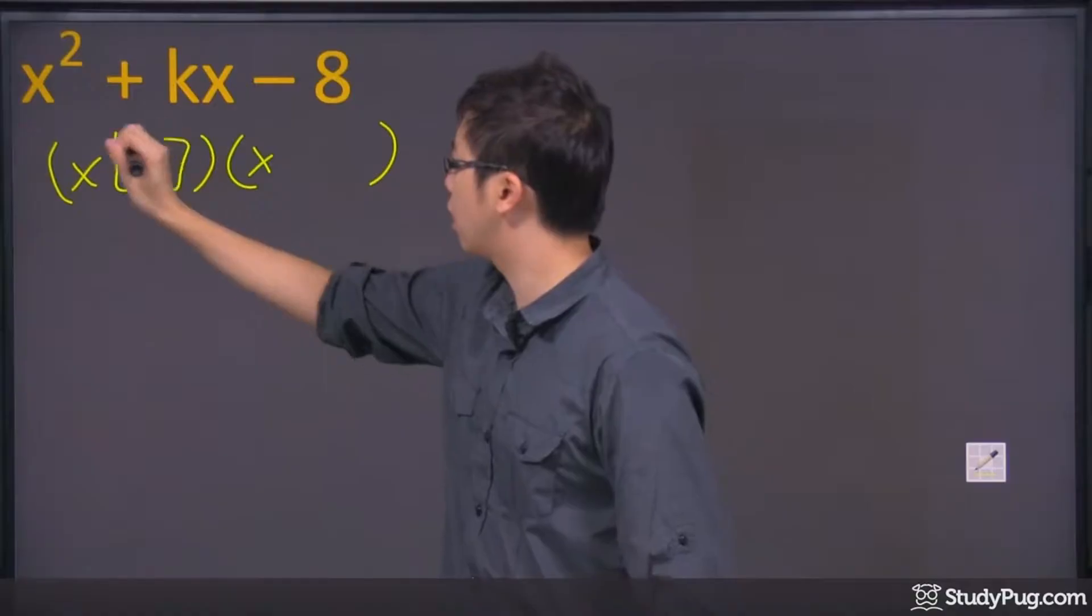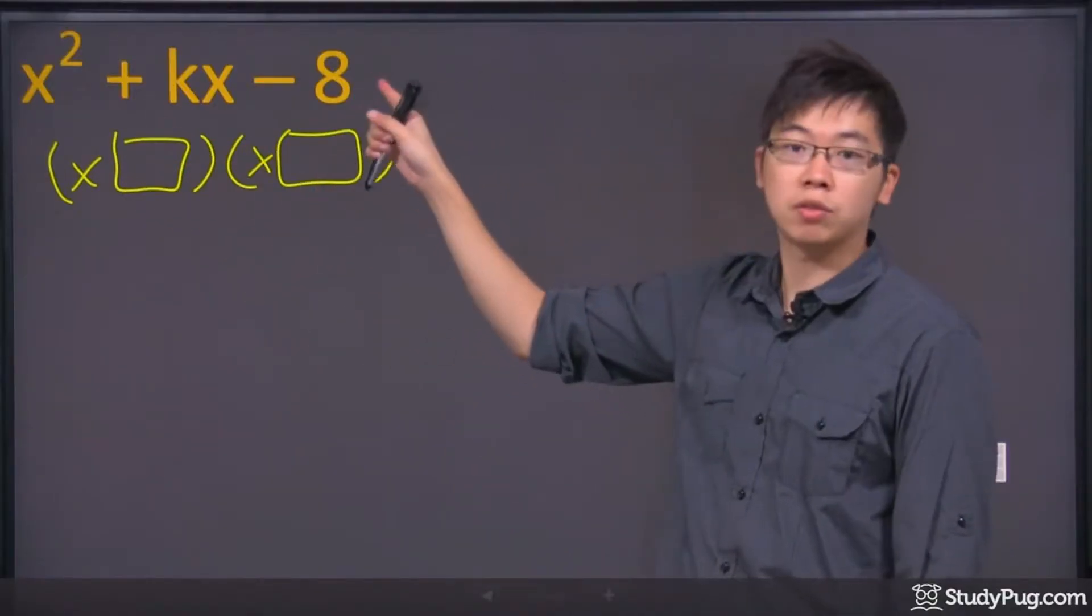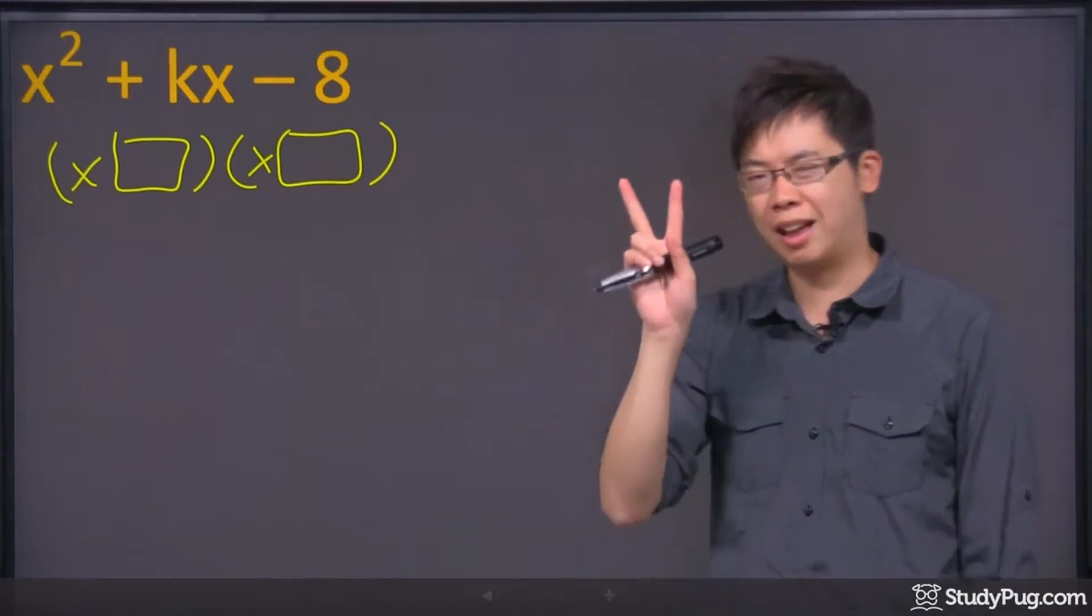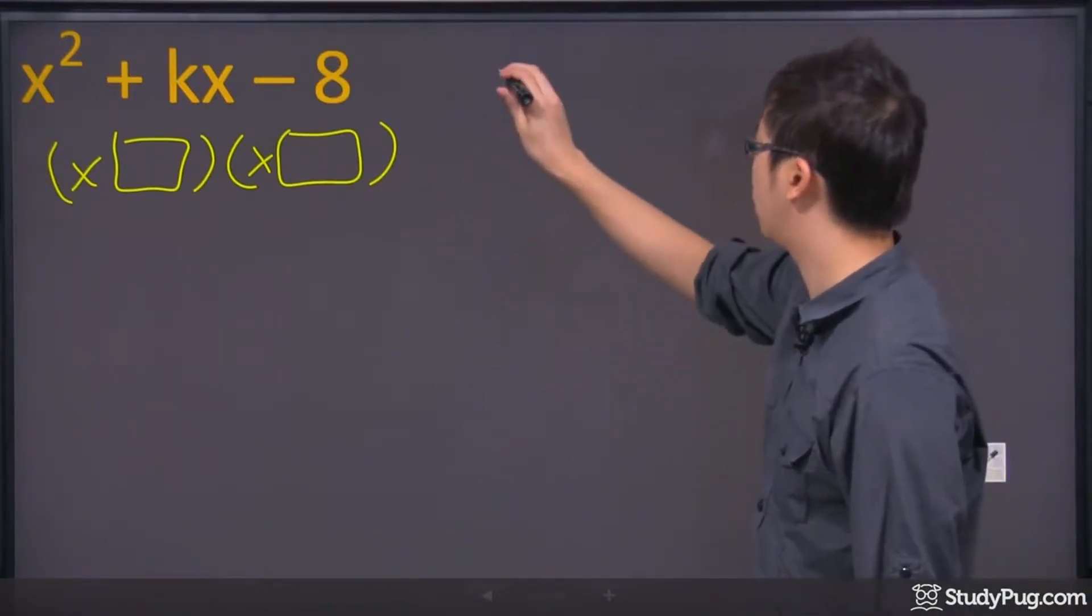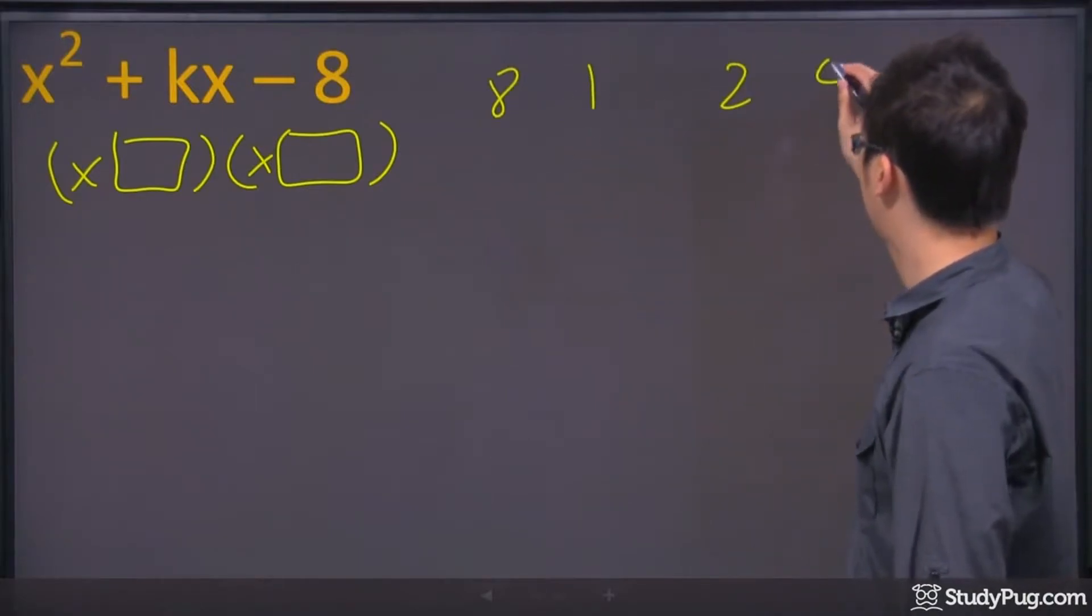Now, the number that goes here and here is basically this. You need to figure out the factors of 8 first. Two numbers that'll give you 8. What do we have? We got 8 and 1, right? So we got 8 times 1. We also have 2 times 4.